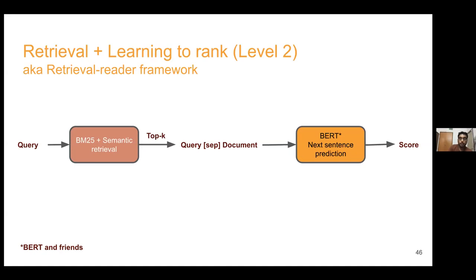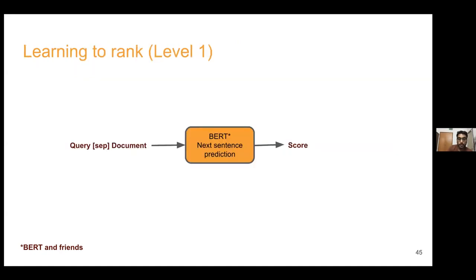The problem with cross-encoder ranking alone: for one incoming query against one million documents, you'd need to run all one million query-document pairs through the heavy BERT model to get scores. Experiments show this can take minutes to hours - very impractical.